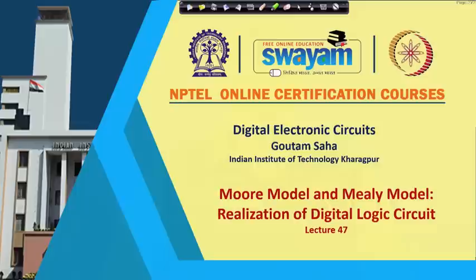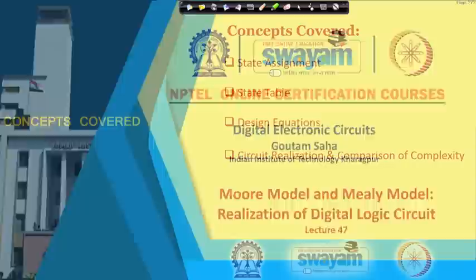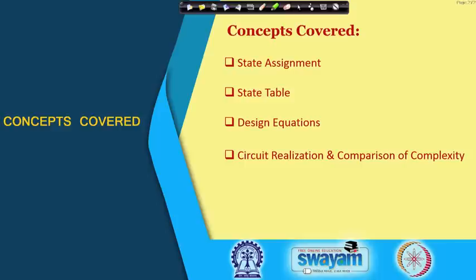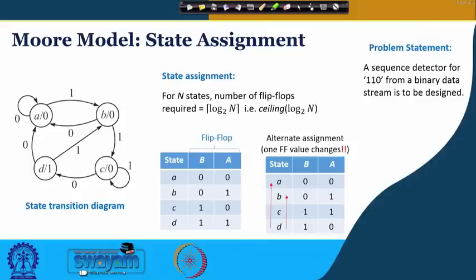Hello everybody. In the last class we had seen how Moore model and Mealy model are defined and what are the relative advantages and disadvantages. Then we picked up one specific problem statement and we tried to solve that problem using both Mealy model and Moore model, and in the process we understood their relative strengths and weaknesses. In this particular class, we shall move ahead with that problem statement and see how the circuit is finally realized, and look into how the circuits from Moore model and Mealy model compare in terms of complexity.